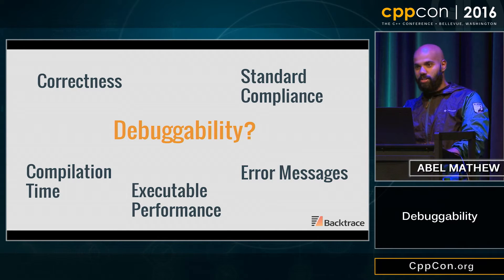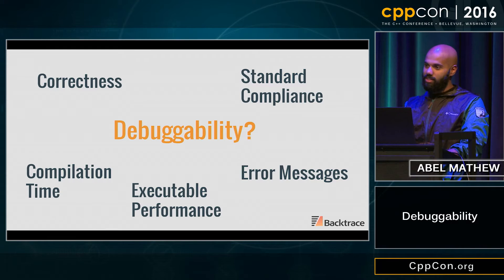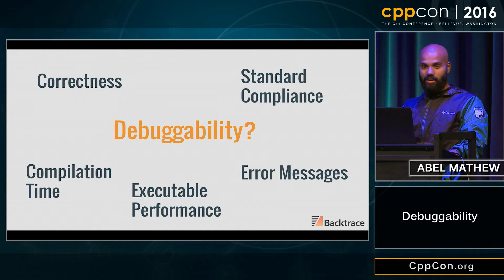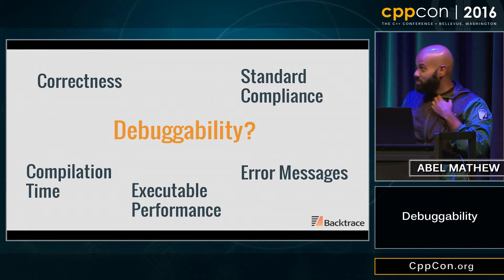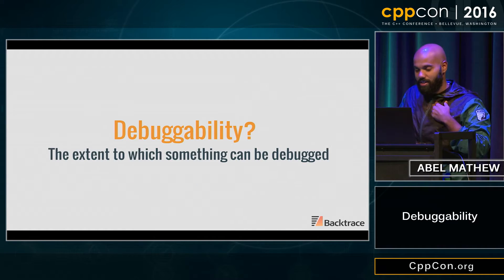What are some other ways we can actually compare compilers? There's correctness, which is obviously very important, but not a lot of us focus on that. We kind of just trust our compilers — whether they're compliant and whether or not they give us good compilation time.